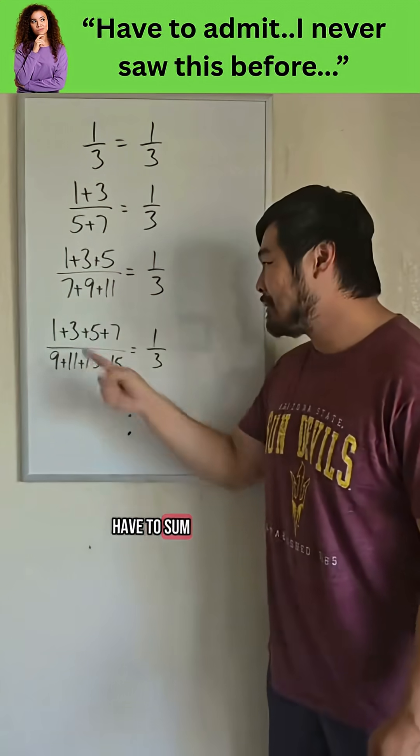This is really cool. If we have the sum of the first n positive odd numbers and divide that by the next n odd numbers, we will always get one third. Always. Here's why.